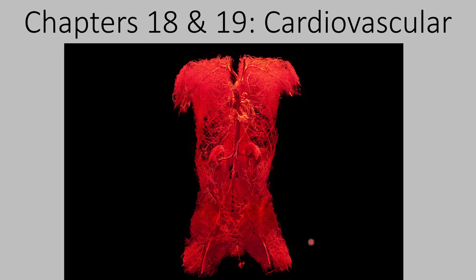Welcome back to our coverage of the cardiovascular system. This is the third lecture in our cardiovascular unit, where we're covering three chapters in total: chapter 18 on the heart, chapter 19 on the vessels, and briefly chapter 20 on the lymphatic system. Today we're focusing on chapter 18, learning heart anatomy. In our next lecture we'll look at the path of blood, followed by heart function and blood pressure.